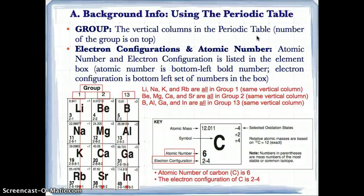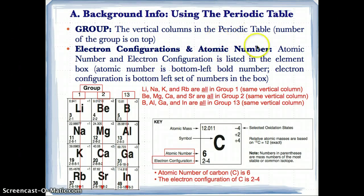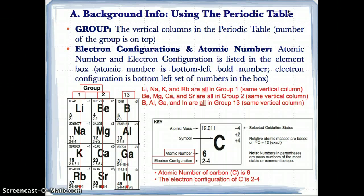Groups are the vertical columns in the periodic table, meaning they go up and down. The vertical columns in the periodic table are known as groups and the number of the group is on top, such as 1 for this column, 2 for this column, and 13 for this column. The number tells you the number of the group. So the groups are the vertical columns in the periodic table.